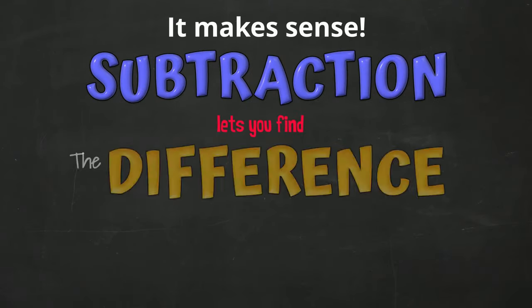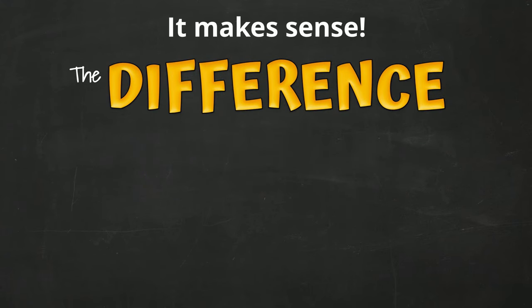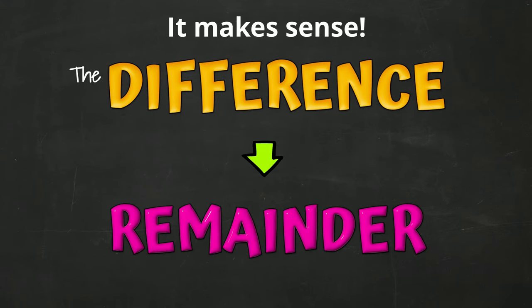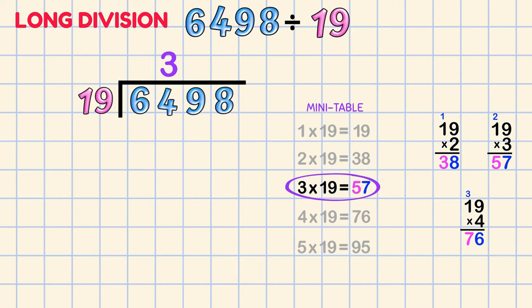Subtraction lets you find the difference. The difference is the remainder! We know that 3 x 19 is 57. If we put 57 underneath 64 we can do a subtraction to find the difference. The remainder!